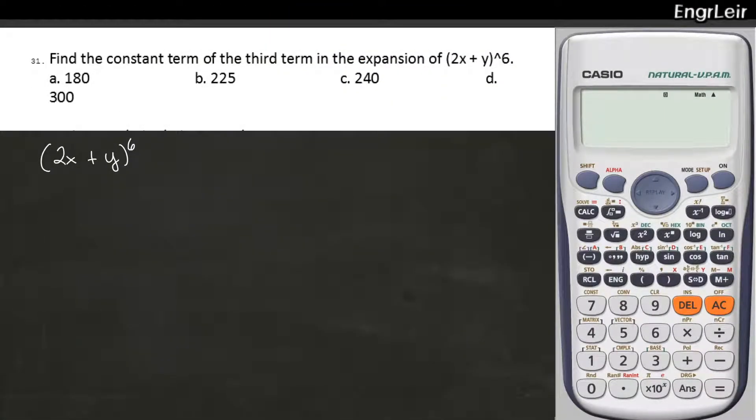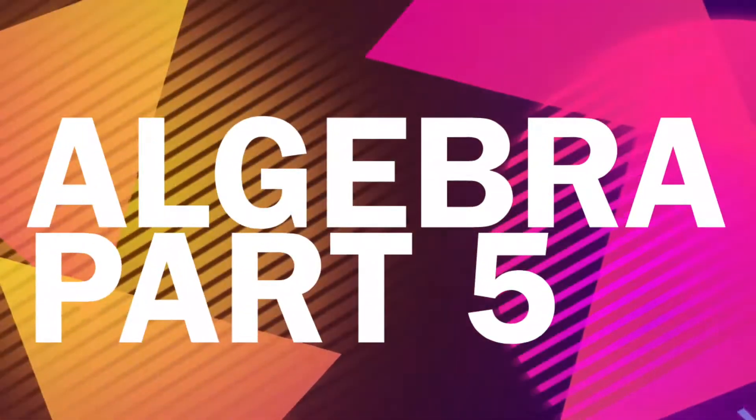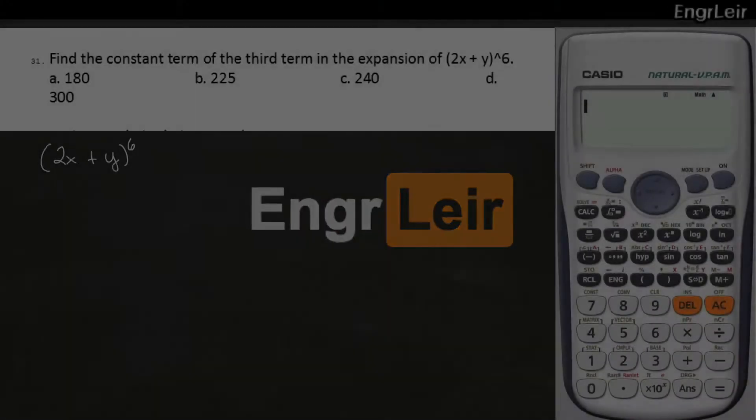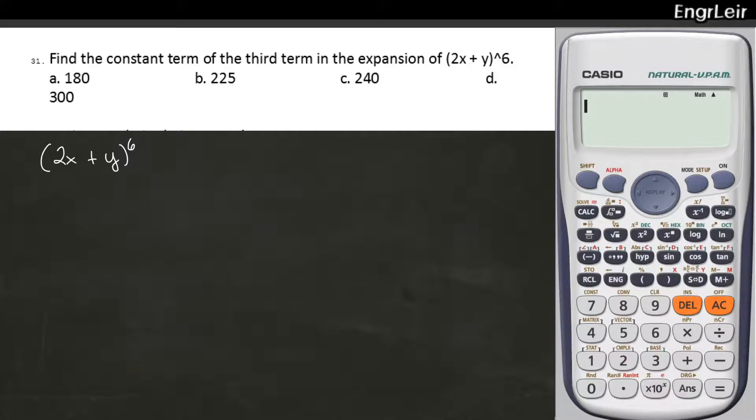Number 31 in our Algebra Refresher Set. Find the constant term of the third term. Actually, let's find the coefficient of the third term in the expansion. 2x plus y raised to 6. Not the constant term, but rather the coefficient. Okay, 2x plus y raised to 6.